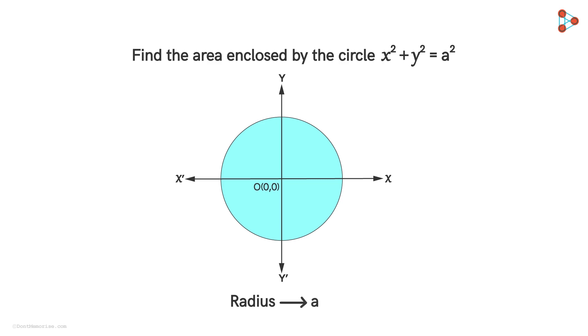Hence, we will mark the points B(0,a) and A(a,0) as shown. The area enclosed by this entire circle will be equal to 4 times the area of the region AOBA. So if we find this area, then we can easily find the entire area enclosed by the circle.